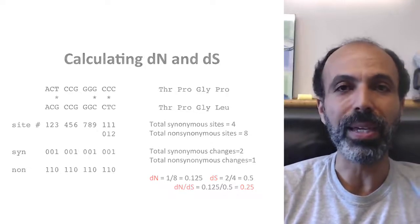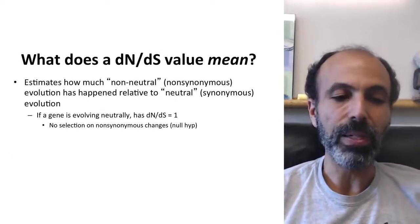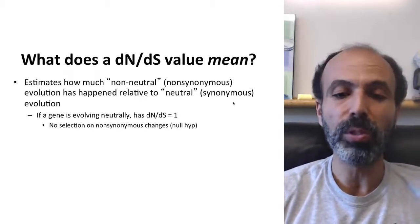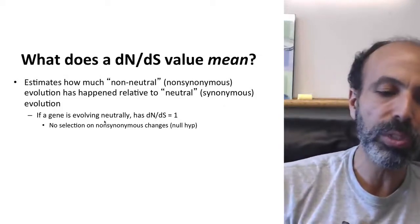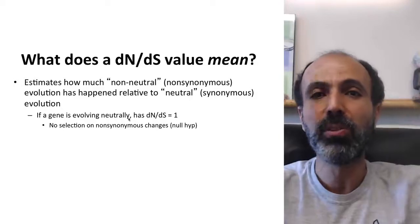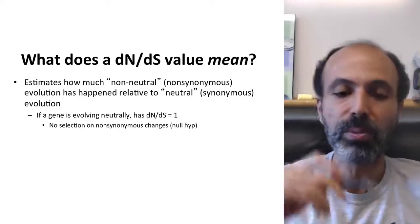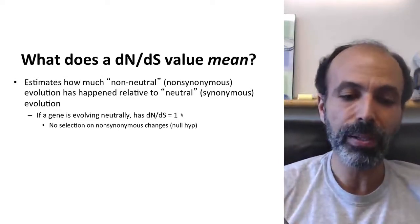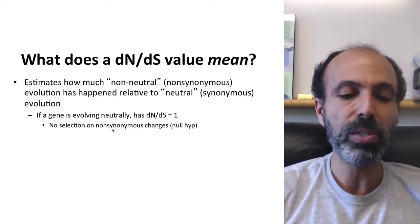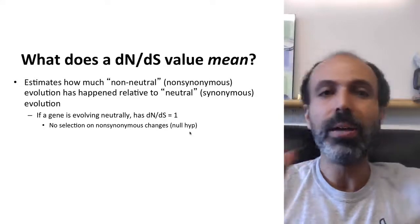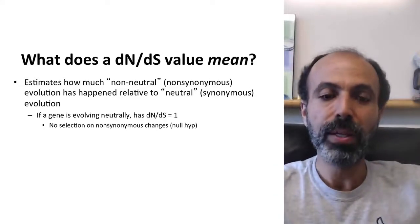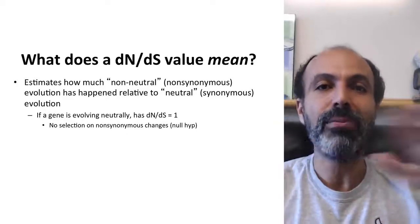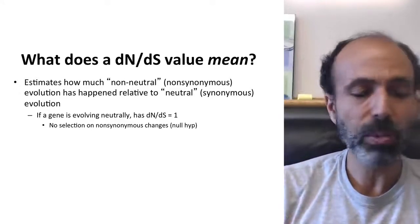Now, you might wonder what does this mean? So what does any dN/dS value mean? Well, this is estimating how much non-neutral or non-synonymous evolution has happened relative to neutral or synonymous evolution. Well, if a gene is evolving truly neutrally, if it really just didn't matter what differences you saw, if anything was equally okay in terms of fitness, we expect a dN/dS value close to one. That's not at all what we saw, but we expect a dN/dS value close to one. So this is saying there's no selection on non-synonymous changes. There's no bad, there's no good, but basically they're just like the neutral ones. In that case, you would actually have more non-synonymous changes than synonymous changes, but since you have more non-synonymous sites, it factors that out. So this would be what's happening in terms of neutrality.